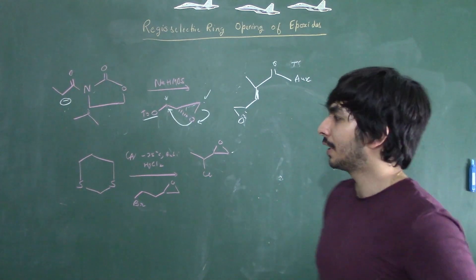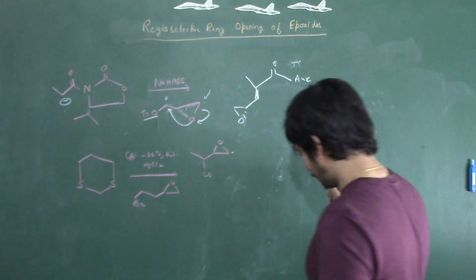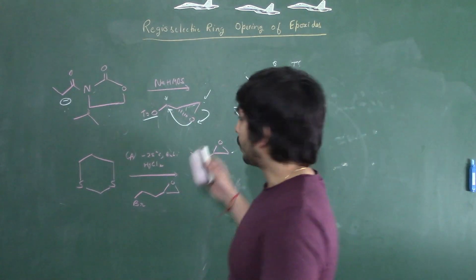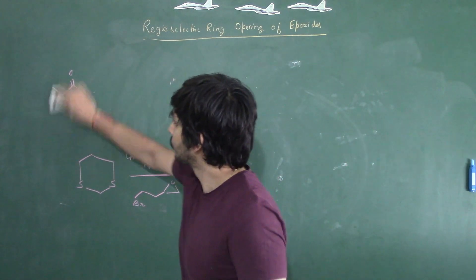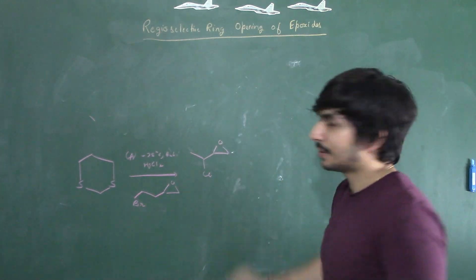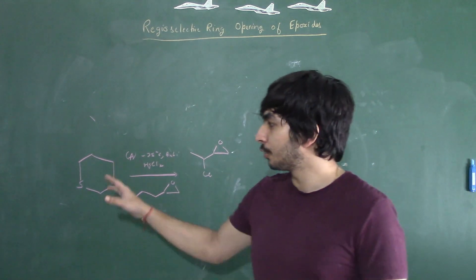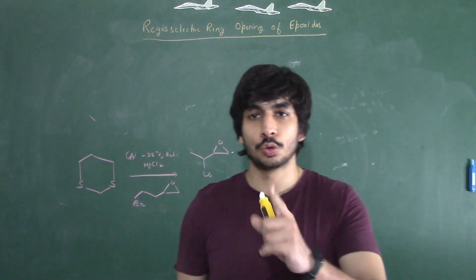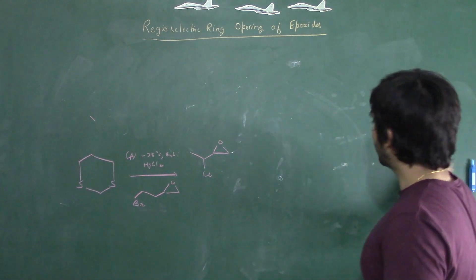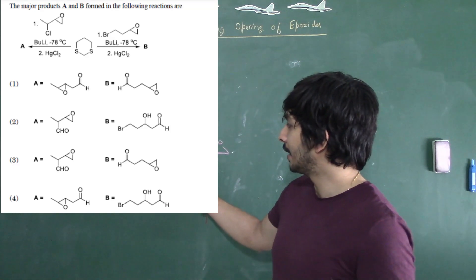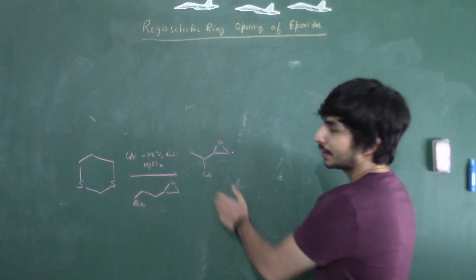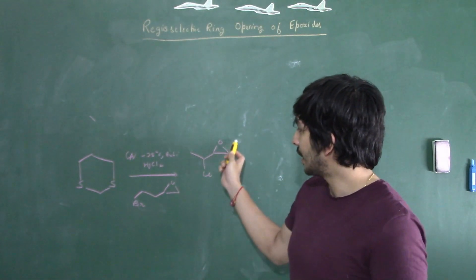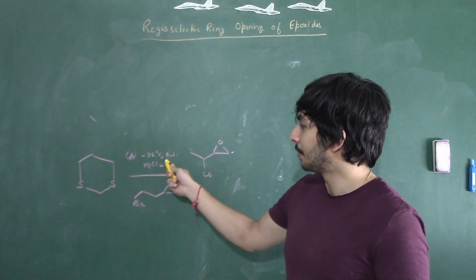Now look at the next question, which is very interesting. This question is from December 2019, and a very similar question was also asked in June 2019 — so please go ahead and practice that question for your convenience. They have given a dithiane, and to this dithiane we are adding n-butyllithium at minus 78 degrees Celsius in the presence of an epichlorohydrin derivative, and they are asking what is the product. Then HgCl₂ is added as a second step.